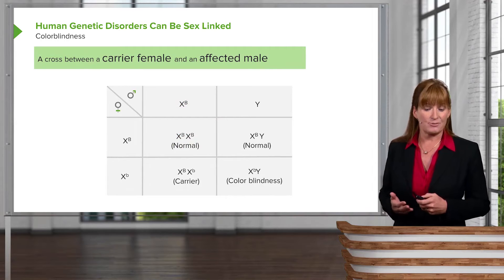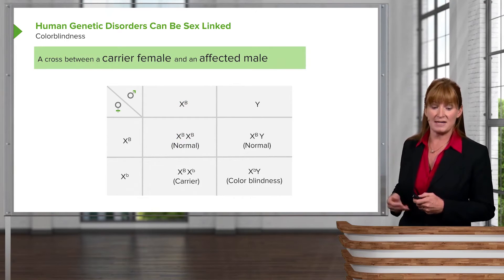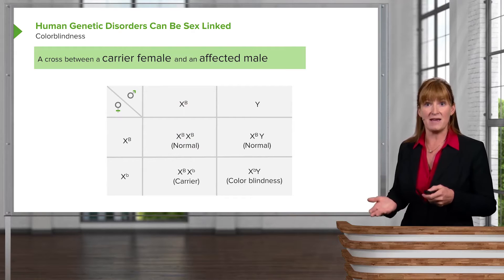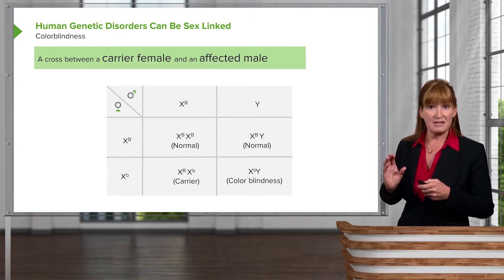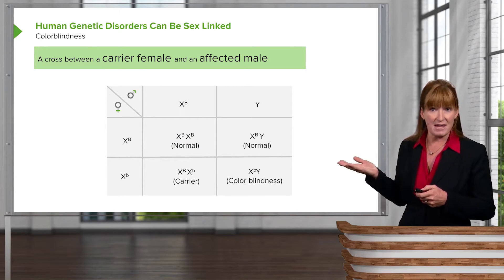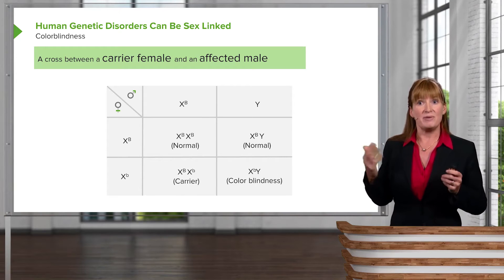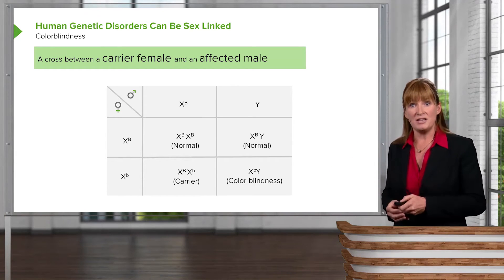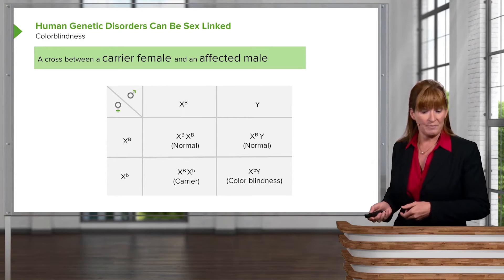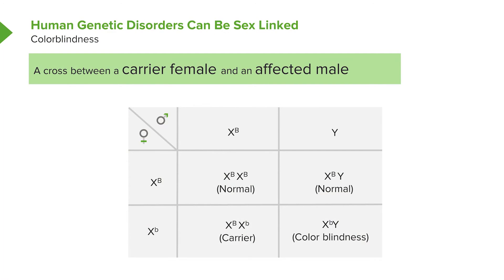So why do we see this skewed ratio where colorblindness is more frequent in males? It's an X-linked recessive case. In this example, we are crossing a carrier female who has the allele for colorblindness — the recessive allele — and she can pass that on to her sons, but not her daughters. If the father had actual colorblindness, there's a potential for a daughter to have colorblindness too. But because the male only has one X, if they get the allele, they are colorblind — there's no possibility of covering it up.